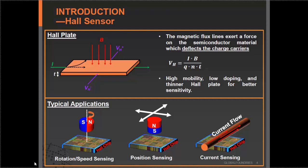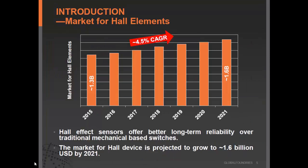All those basic applications can be extended to a very wide range of industrial and automotive applications. Because of the unique advantage of Hall sensors and Hall switches — they do not require any physical contact during operation — Hall devices actually offer better long-term reliability compared with conventional mechanical-based switches. It has been projected that the Hall device market can hit US $1.6 billion by end of year 2021.